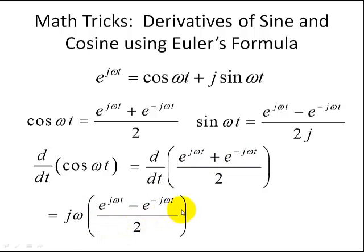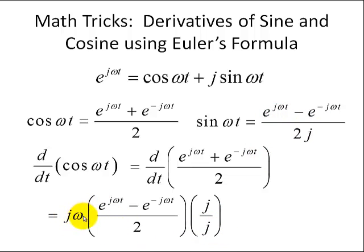Then we multiply by j divided by j, because I want to get a 2j in the denominator so I can use the sine definition. When I do that, j times j is negative 1, which means that substituting the definition of sine, we get minus omega sine omega t.